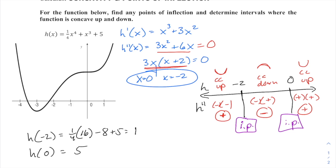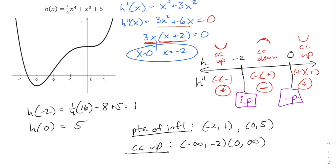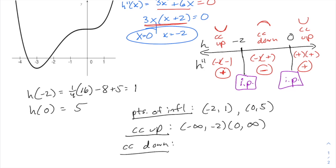So here is our final results. Our points of inflection are negative 2, comma 1, and 0, comma 5. We had 2. And as far as our intervals of concavity, our function is concave up from negative infinity to negative 2, as well as from 0 to positive infinity, and concave down in between negative 2 and 0. And that is it.